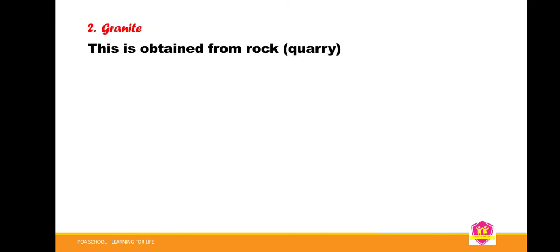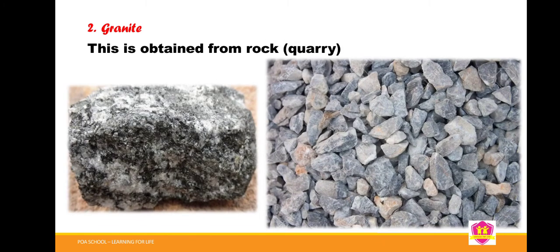The second type is known as granite. Granite is mostly obtained from rock. When rock is blasted — for example by inserting dynamite — the stones which come out can be collected and further broken into different sizes, making them suitable for any constructional work.